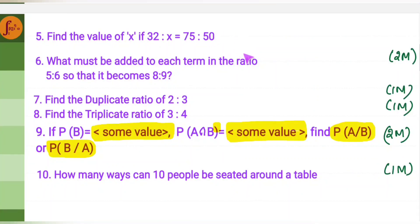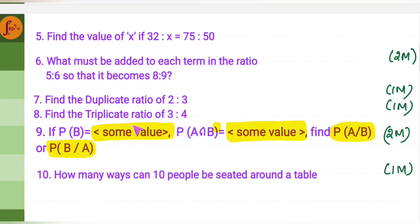Next is ratio and proportions, which has quick 2 marker and 1 marker questions. You may be asked to find a value given a proportion, what must be added to each term to make an 8 to 9 ratio, how to find the duplicate ratio (squaring the terms) or triplicate ratio (cubing the terms). There is also a simple 2 marker on probability — given probability of B, A, or A and B, you find the conditional probability of A given B or B given A. Another question involves circular permutations, such as how many people can be seated around a table.